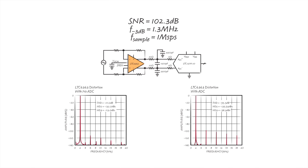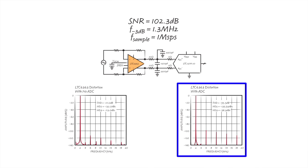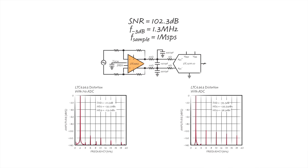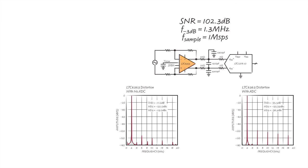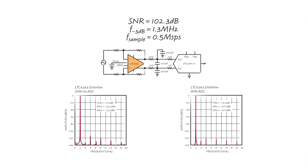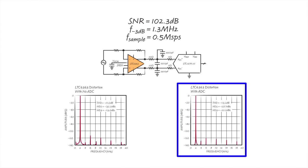However, when the LTC 2378-20 is added to the system, the distortion deteriorates. If the ADC glitches are responsible, then reducing the sample clock should improve the THD, as this will allow the amp output to settle more completely. When I reduce the sample clock in half, the THD numbers do return to acceptable levels.